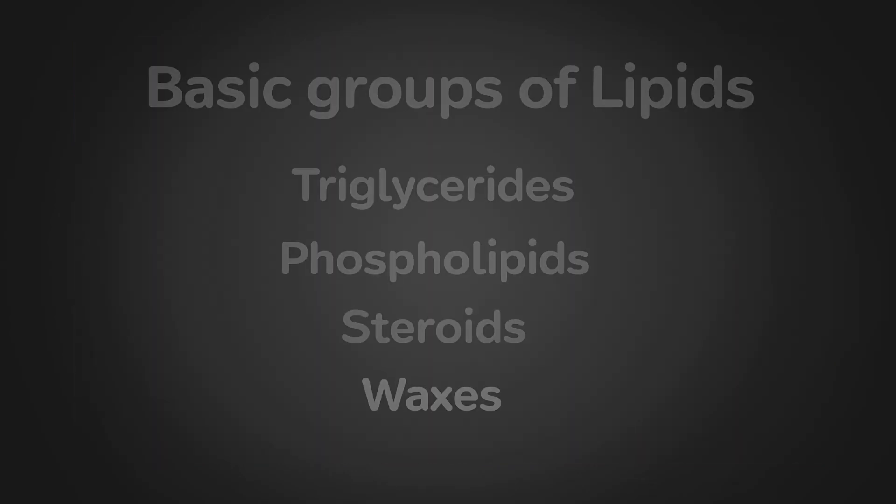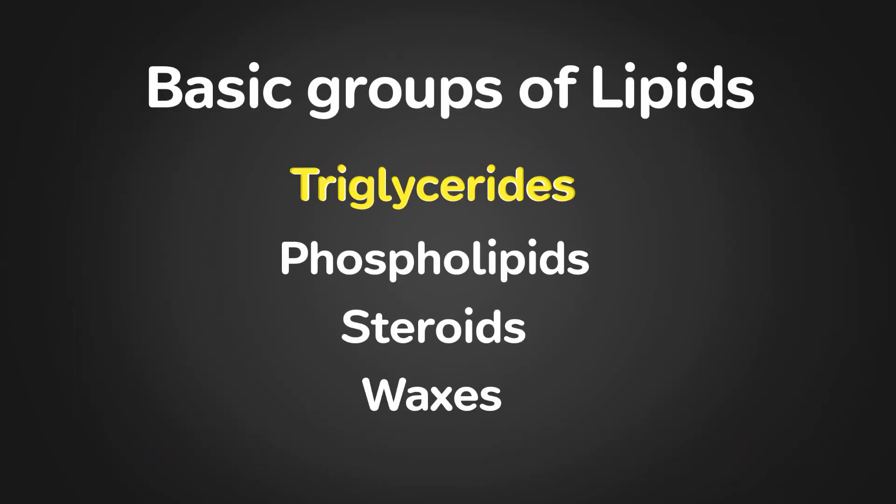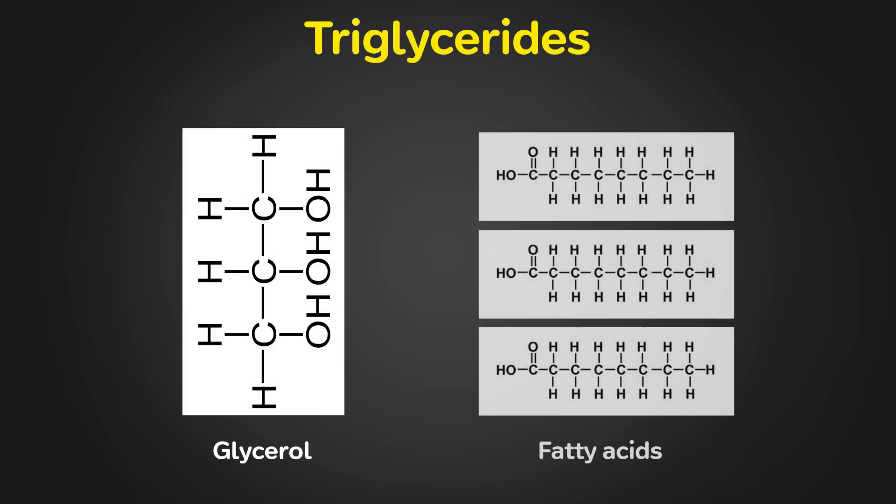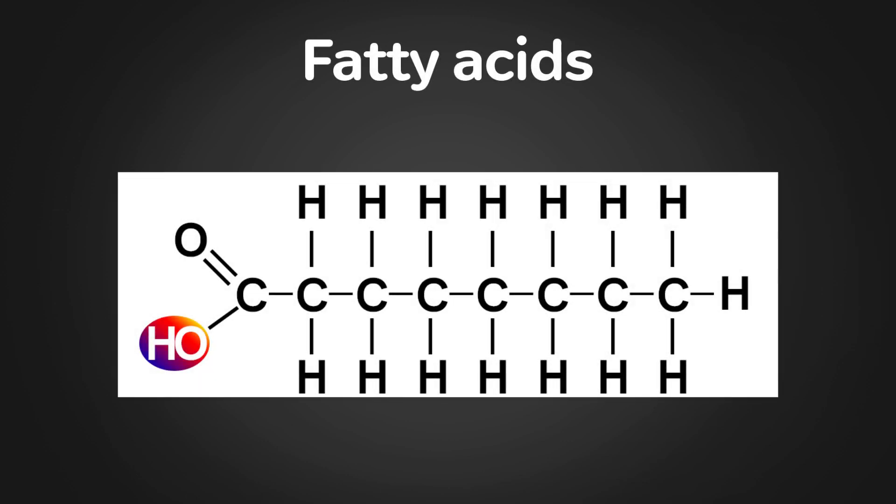The first category we are going to show you is triglycerides. They contain two types of subunit molecules, glycerol and three fatty acids. The fatty acids can be saturated and unsaturated.